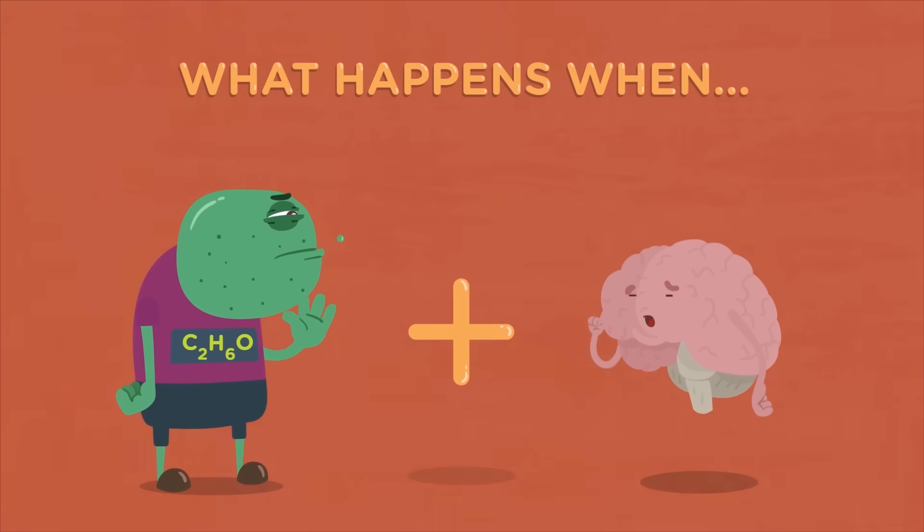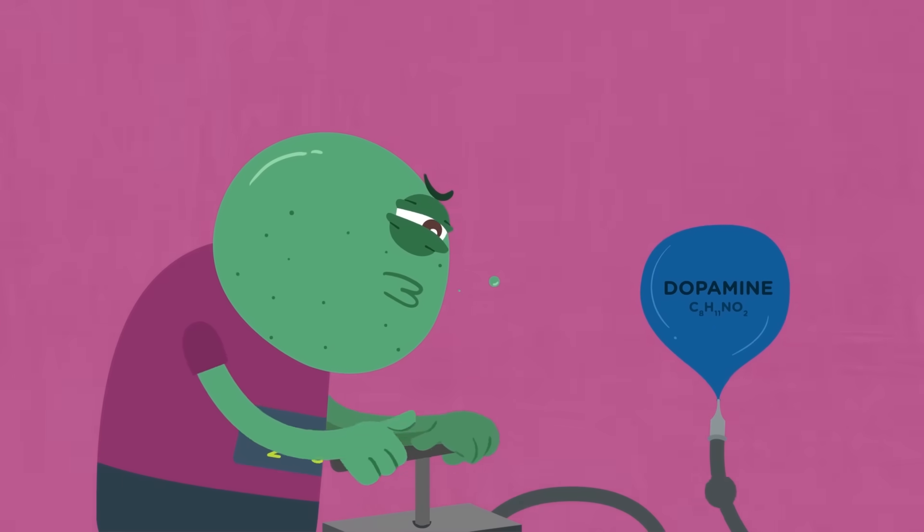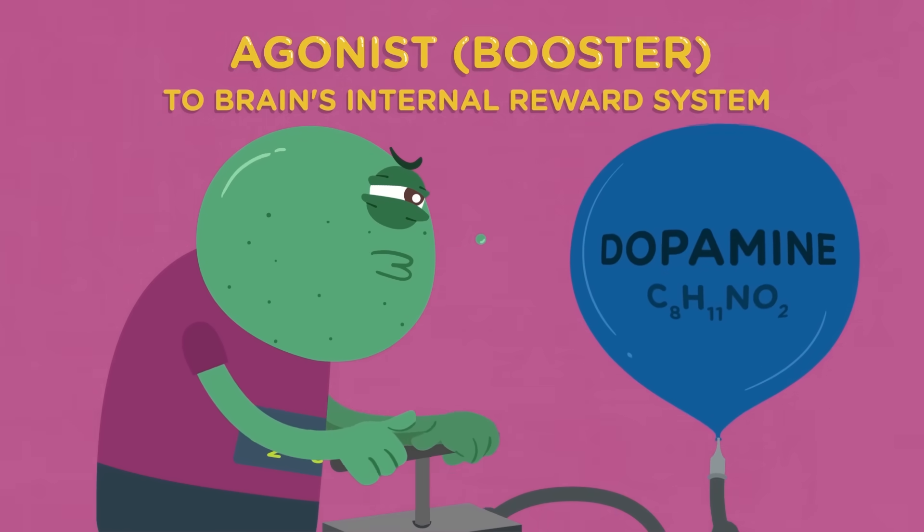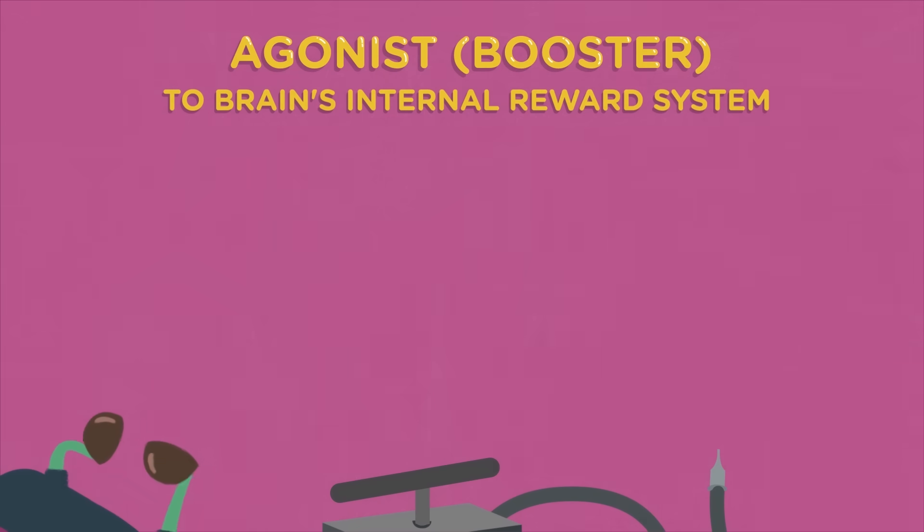Now let's see what happens when you introduce alcohol to this finely tuned system. To start, alcohol acts as an agonist or booster to certain chemicals in the brain's internal reward system. That's what can give people the relaxed feeling you may have heard about.